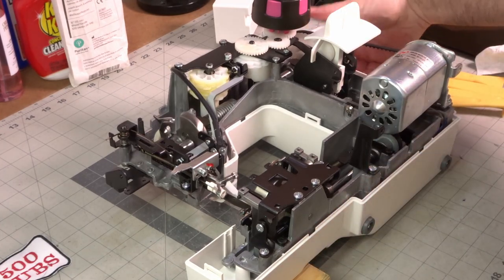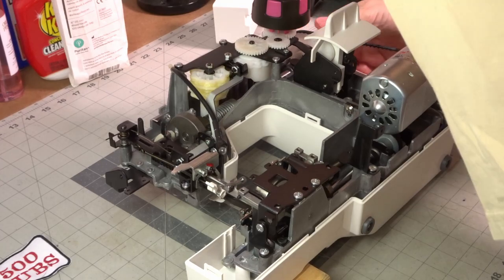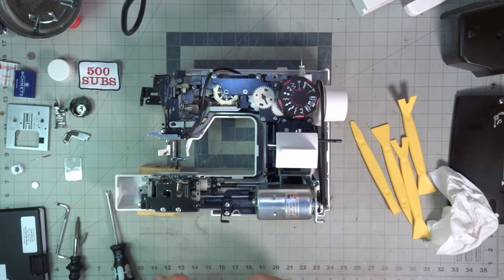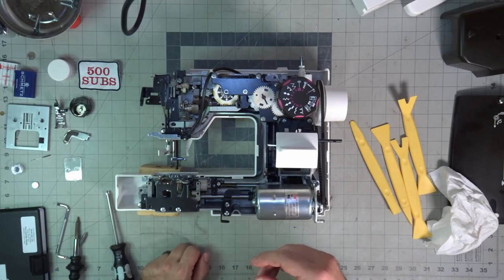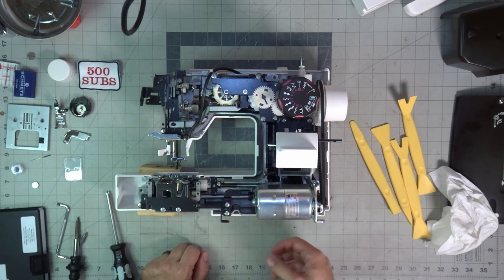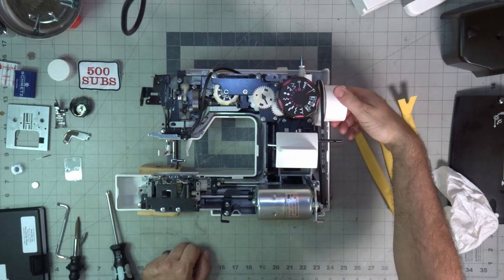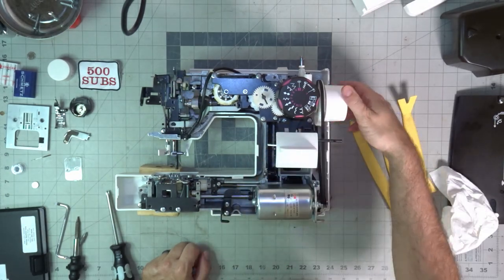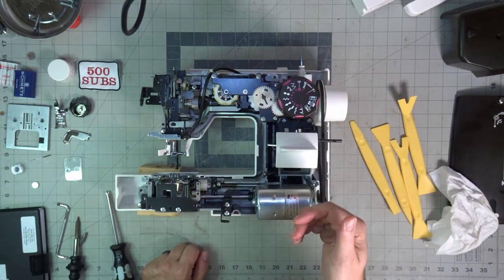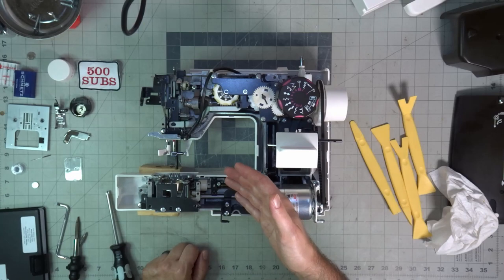I've done some research on these bushings that they use on these machines. These are porous metal. And, from the look of them, I believe that they're iron bushings. Possibly aluminum.